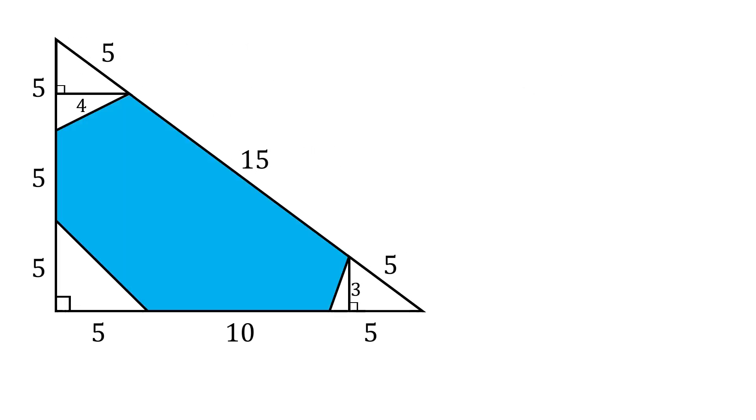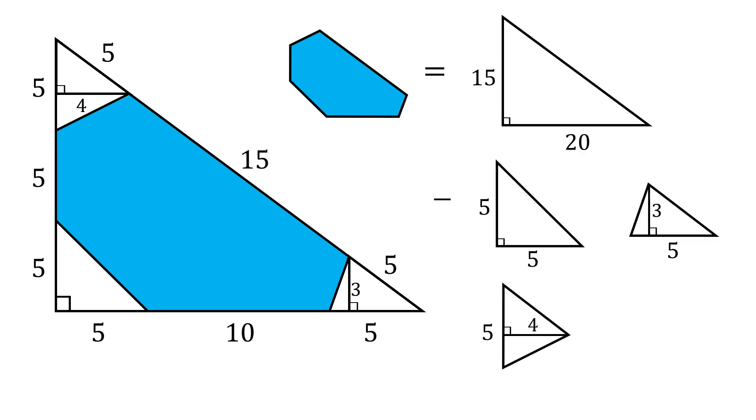The area of the hexagon will be equal to the area of the entire triangle minus the areas of the triangles in the three corners. But we know the base and the height of each of these triangles, so we can calculate each of these areas. The entire triangle has an area equal to 15 times 20 all over 2.